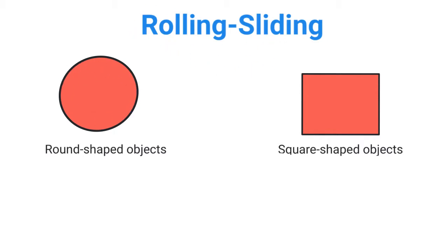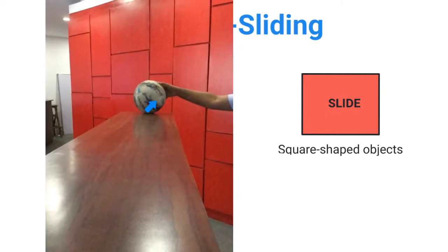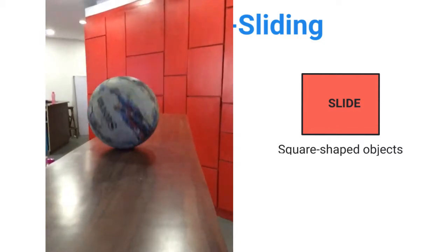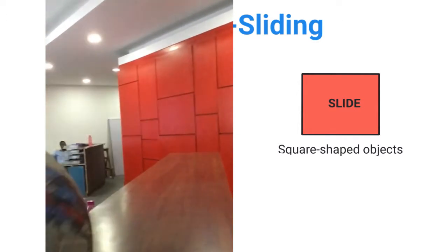Round objects will roll and square shaped objects will slide. Let's first look at rolling. In this video you can see that the object is round in shape — it is a ball, and it is round shaped. Let's watch how a round shaped object rolls. Look carefully. Let's watch the video once again.